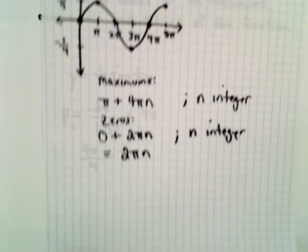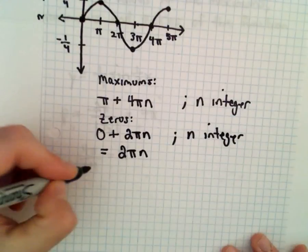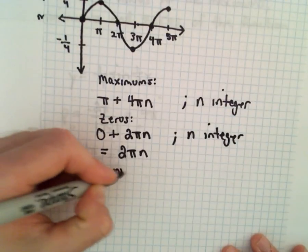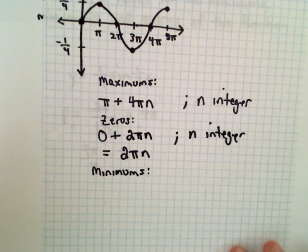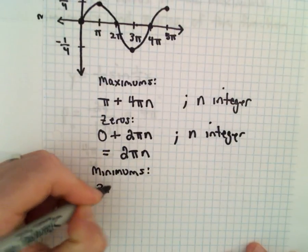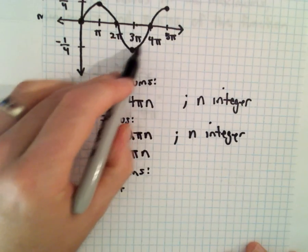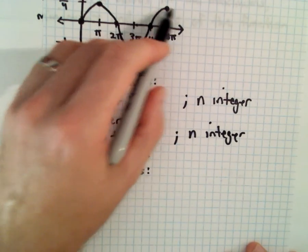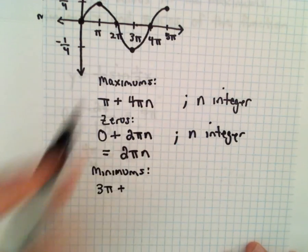And to get the minimums, we'll just do the same thing that we did with the maximums, same idea. So our first minimum here occurs at three pi. And every time we complete one full period, one complete period, we're going to be back at a minimum.